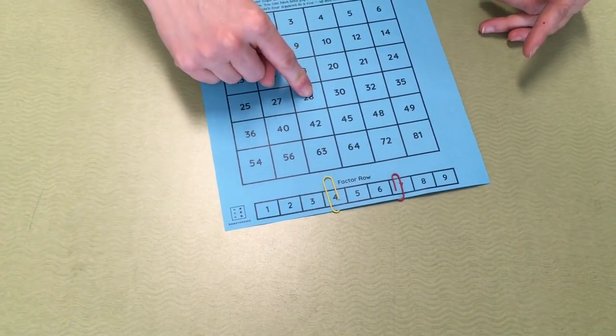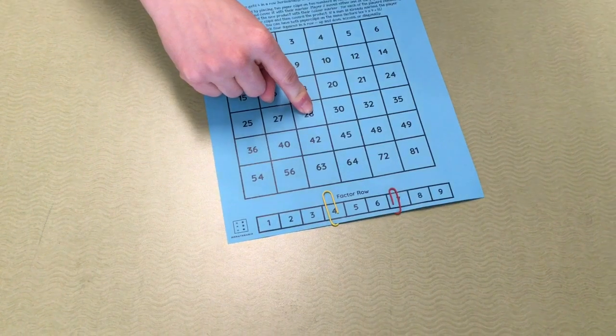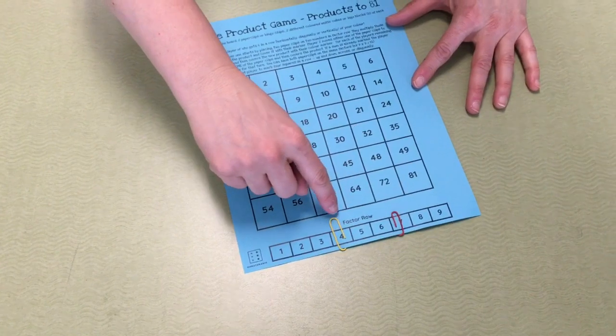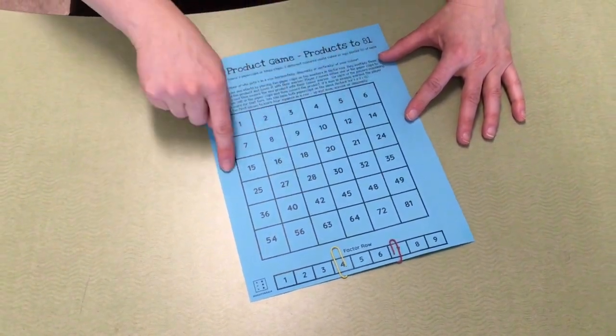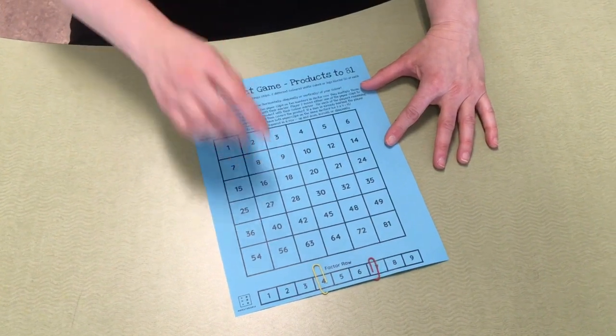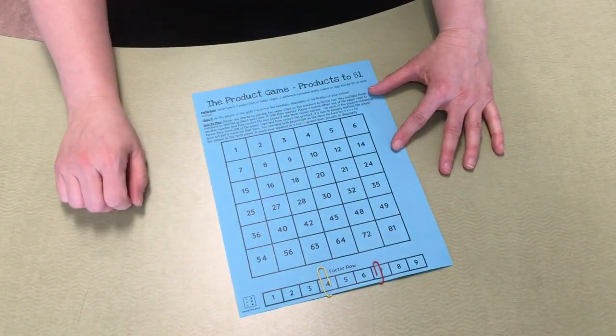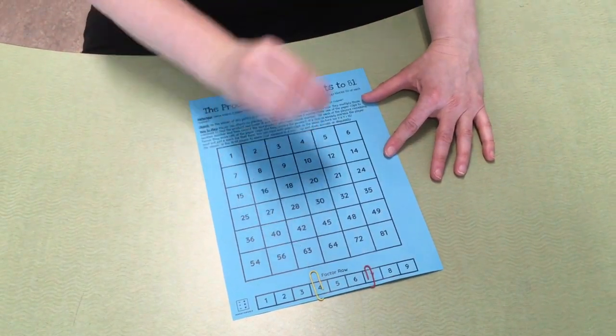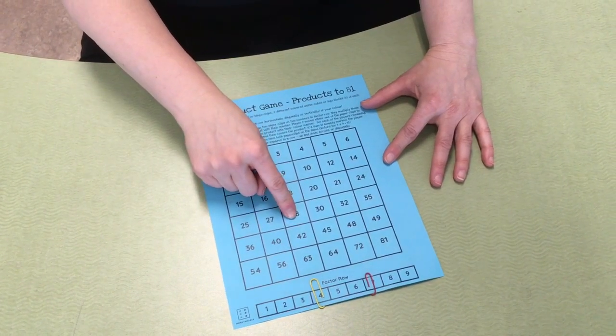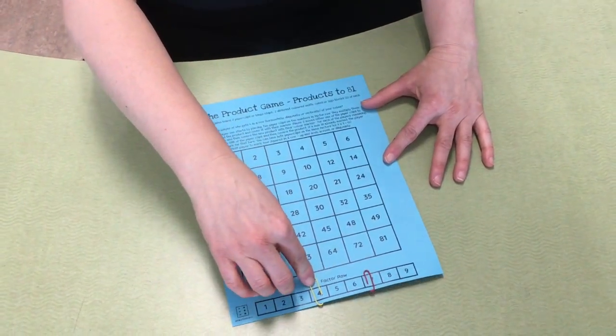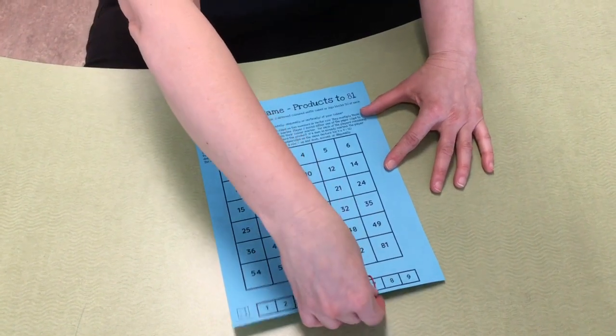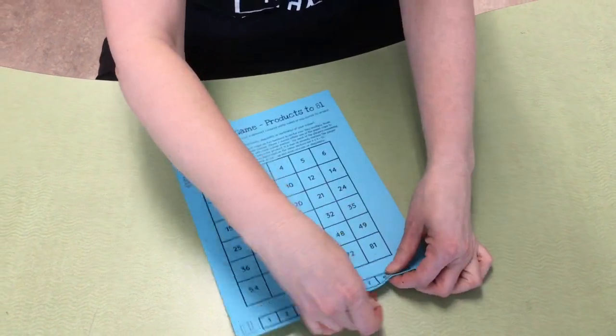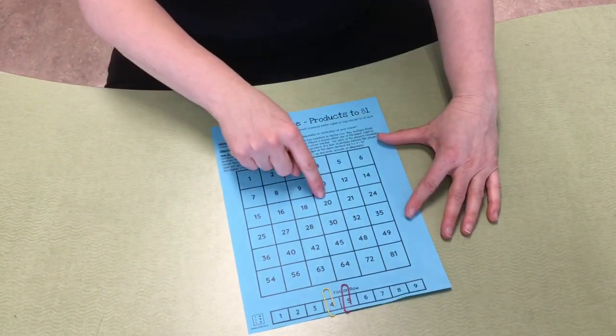The object of the game is like Connect Four where you're trying to get four of your same color in a row, either vertically, horizontally, or diagonally. If the first player has it on four times seven, the next player is only allowed to move one of the paper clips, so one of the factors stays the same and they can change one of them to get a different product. So player two might keep this one on the four and decide that if they're going for the number 20, they would need to move the seven to a five. Then four times five is 20, and they would place their color there.